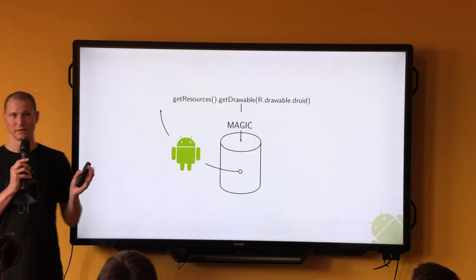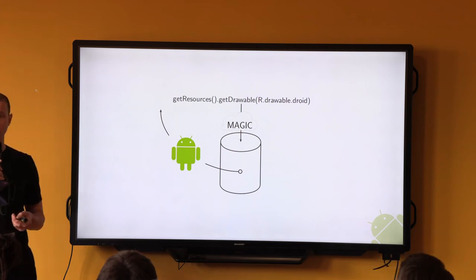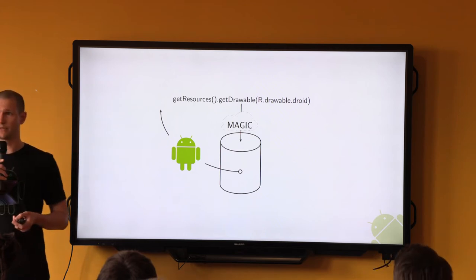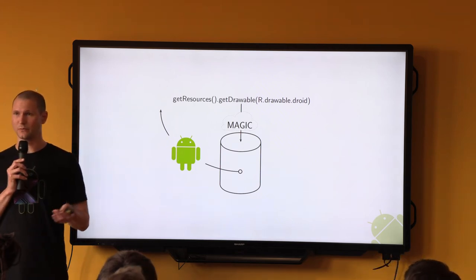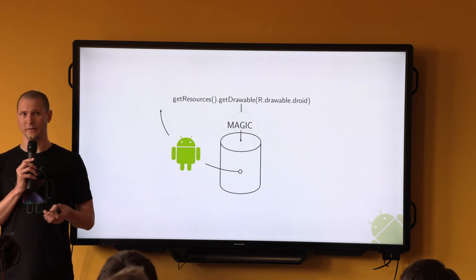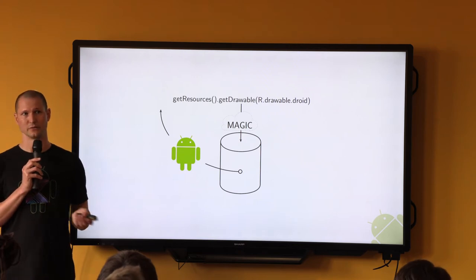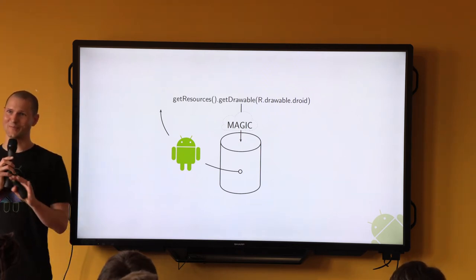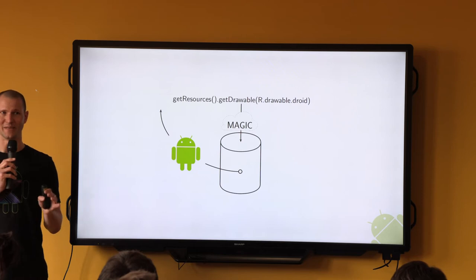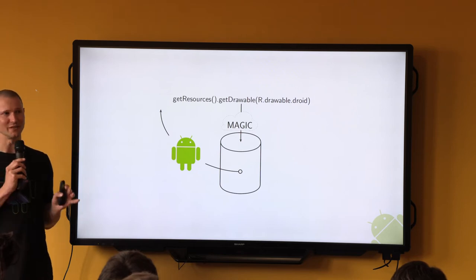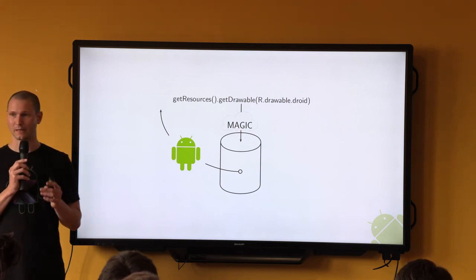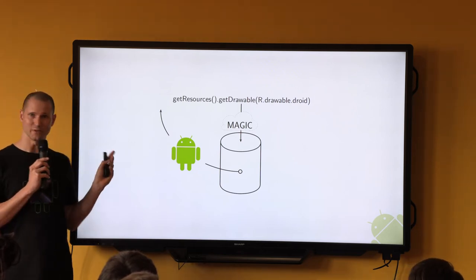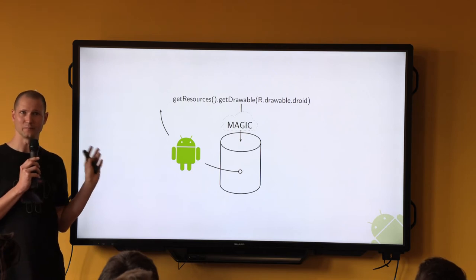On a high level, this is how you interact with the Android resource framework. You call one of the get methods on a resources object, and then the system performs some sort of magic on your behalf and returns you a suitable value. I will explain what goes on inside that magic cloud.